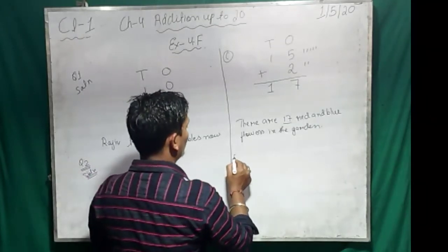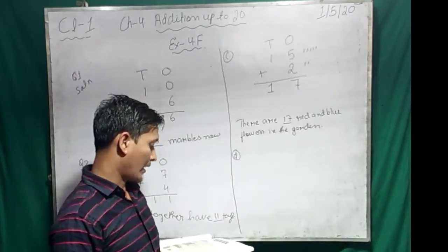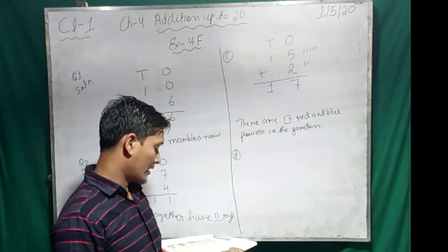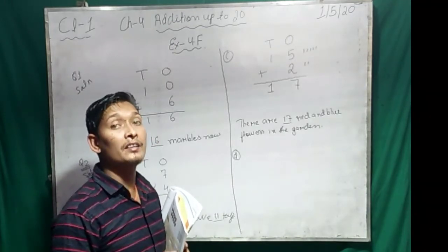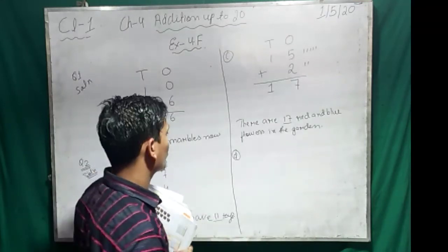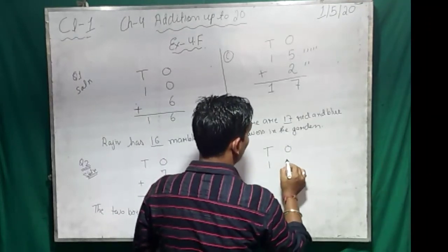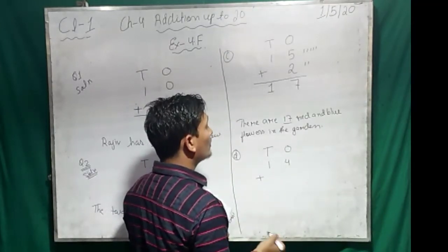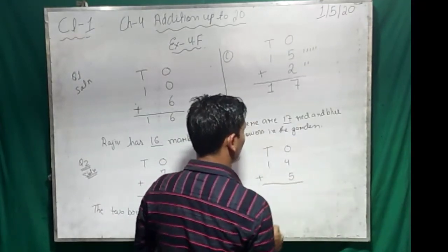Let's do question number D also. Sanjay has 14 books. His father buys five more books for him. How many books does Sanjay have now? Means Sanjay has already how many books? Fourteen. Again, his father bought how many books for him? Five. So we have to find out. So what we have to write: tens and ones. Then one in the tens place and four in the ones place. Then plus. Then where we will write? Where we will write the five? Yes, ones place. Now plus.